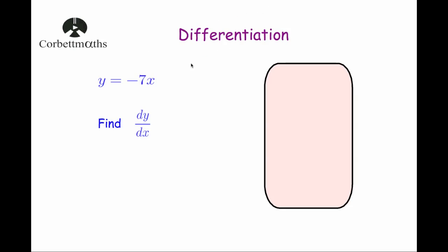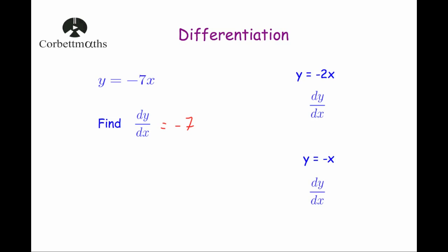Let's look at what happens if the number is negative. For y equals minus 7x, it's a straight line with a negative gradient, so the gradient is always negative 7 — dy by dx equals negative 7. Similarly, if y equals minus 2x, dy by dx is negative 2. And if y equals minus x, dy by dx is just minus 1. Whatever the number in front of x is, that's what you get when you differentiate.